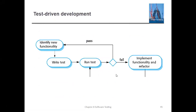In the diagram, we identify some of the functionalities we are going to utilize for our test cases. Once you identify functionalities, you write the test, then run the test. If it passes, you identify a new functionality and continue the process. If it fails, you implement the functionality again and go back to writing the test. This cycle continues in the TDD process, which is why it is known as a plan-driven process.